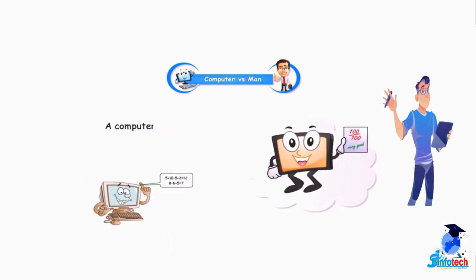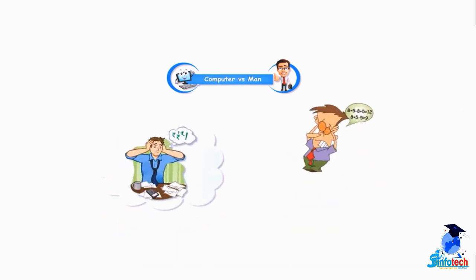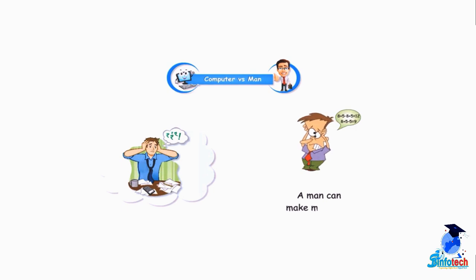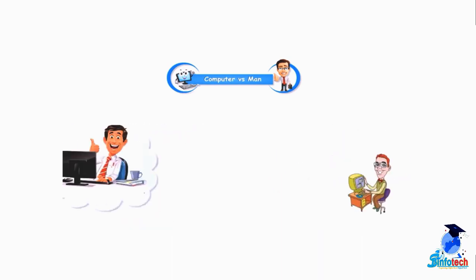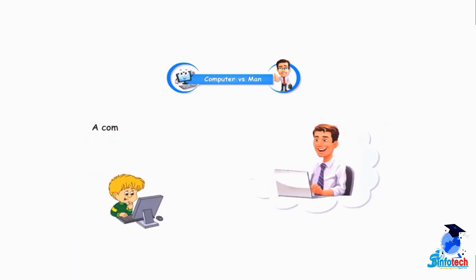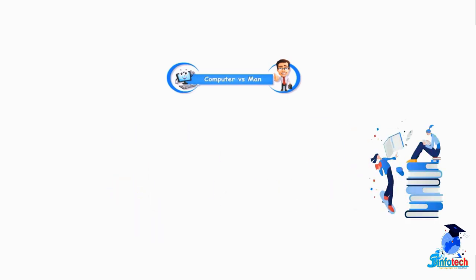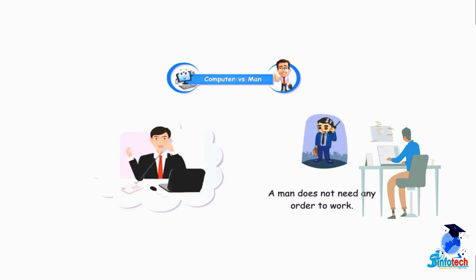A computer does not make any mistakes, whereas a man can make mistakes. A computer cannot take its own decisions. A computer works on a man's orders. A man does not need any order to work.